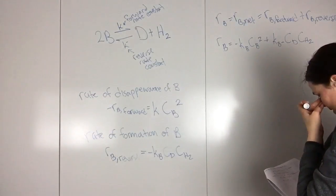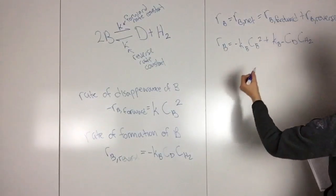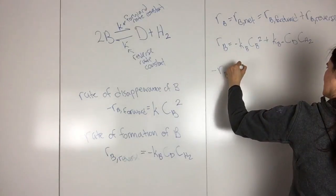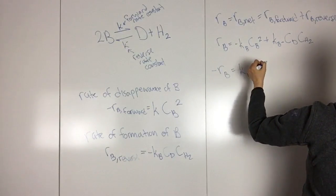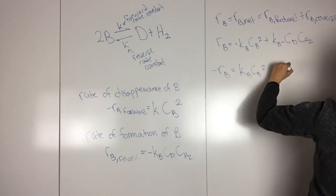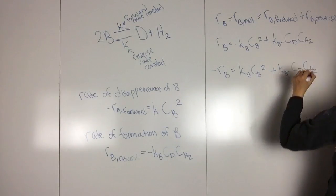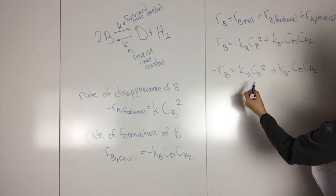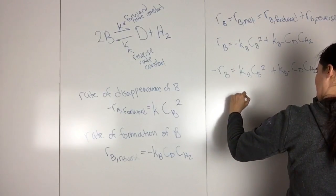And then to obtain the rate of disappearance, we want to multiply by negative 1, so negative RB is equal to KB CB squared plus KB minus CD CH2. And then we want to pull KB out, so pulling that out...